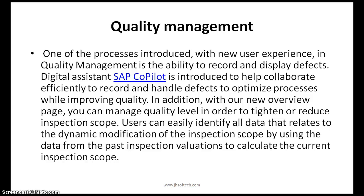To optimize processes while improving quality, in addition, with our new overview page you can manage quality levels in order to reduce or tighten the inspection scope. Users can easily identify all data that relates to the dynamic modification of the inspection scope by using data from past inspection evaluations to calculate the current inspection scope.